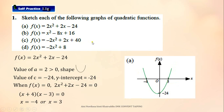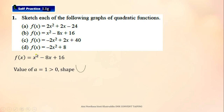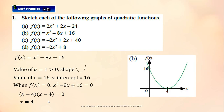Next, question B. This is the function. The value of A is equal to 1, so we will get a U-shape graph. The value of C is 16, so the y-intercept is 16. We factorize this quadratic equation to get the value of x. This is the graph.